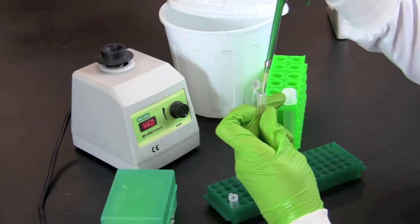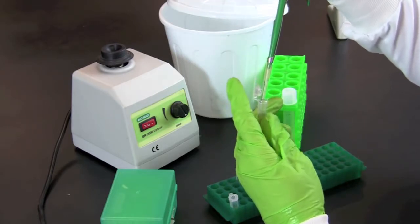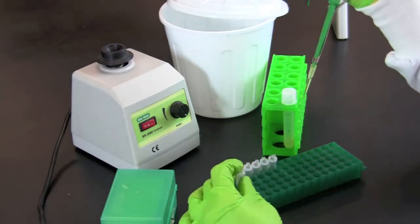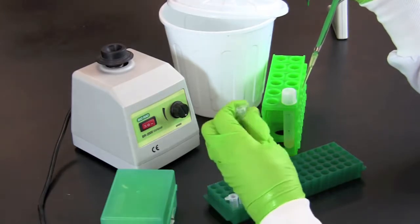Continue to serially dilute the bacterial culture into each consecutive tube until the tube labeled 10 to the seventh is used.